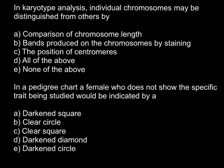Answer A: Comparison of the chromosome length. Answer B: Bands produced on the chromosomes by staining. Answer C: The position of the centromere. Answer D: All of the above. And Answer E: None of the above.